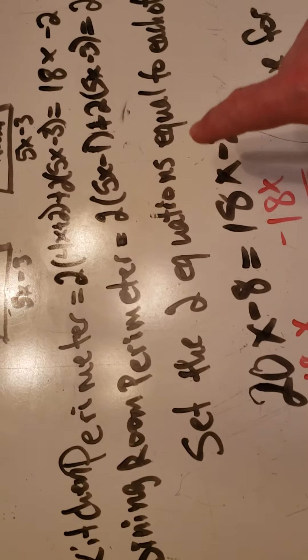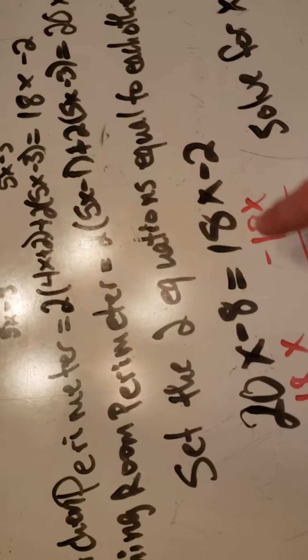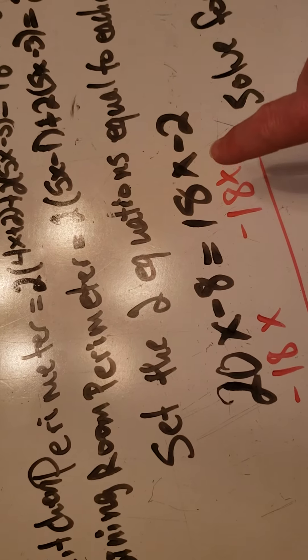So I'm going to set those two equations equal to each other. So I get 20x minus 8 equals 18x minus 2.